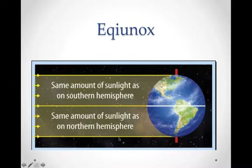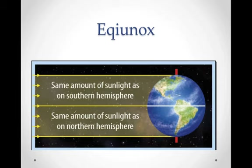The last example is an equinox, which is not a solstice. This happens when neither axis is pointed towards the sun — the axis is at a 90-degree angle to the sun. This happens twice a year. Both the northern and southern hemispheres receive the same amount of sunlight. Equinox means equal night, meaning equal amounts of sunlight and nighttime on both hemispheres.